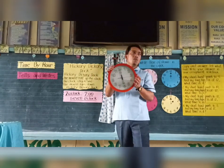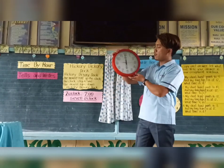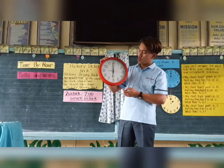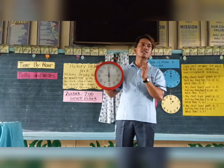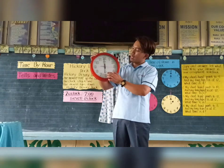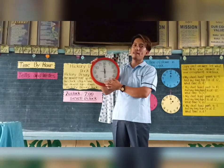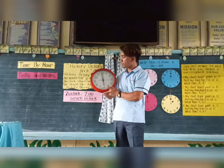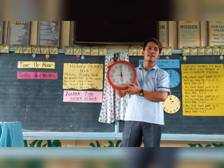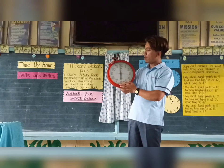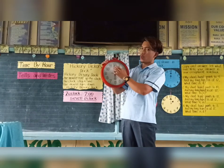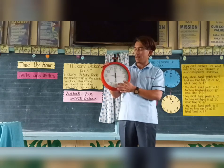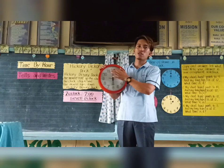So by looking at this clock right now, where does the short hand point? Yes, Marie — number six. The short hand points to number six. And how about the long hand? Yes, Anna — the long hand points to twelve. So the short hand points to six and the long hand points to twelve.